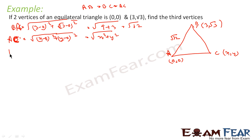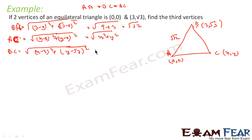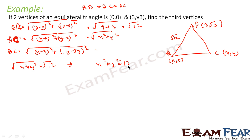And BC is root of (X−3)² + (Y−√3)². These three distances are all equal. So one equation is: root of X² + Y² = root 12. Squaring both sides, we get X² + Y² = 12. This is the first equation.